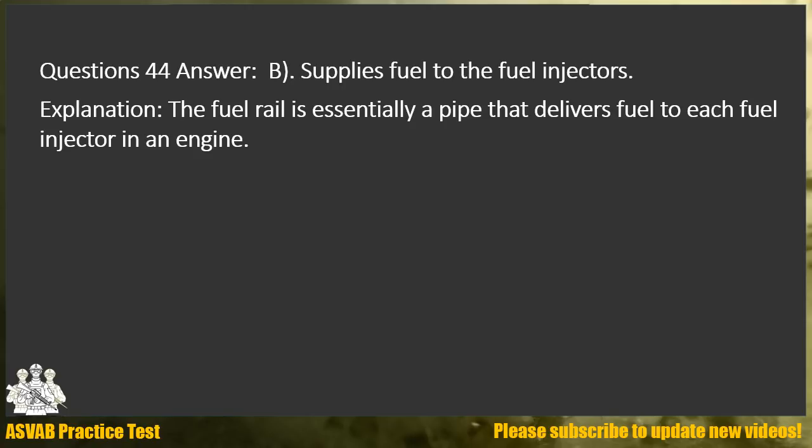Question 44. Answer B. Supplies fuel to the fuel injectors. Explanation: The fuel rail is essentially a pipe that delivers fuel to each fuel injector in an engine.